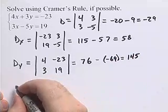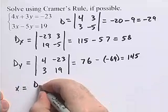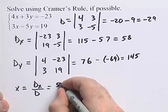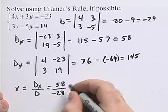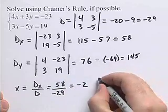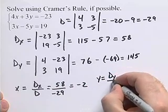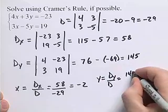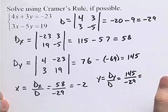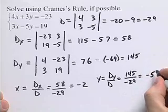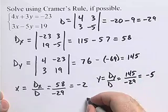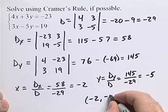Now, to solve this, we have x is going to be dx over d. So dx is 58, d was negative 29. 58 divided by negative 29 is negative 2. y is going to be dy over d. We have dy as 145, d is negative 29. And 145 divided by negative 29 is equal to negative 5. So now we have the x value and the y value for our system. The ordered pair solution is negative 2, negative 5.